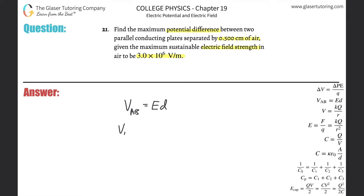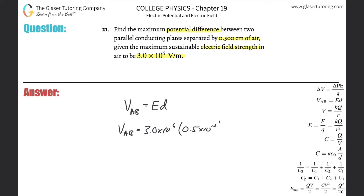So if we know that the maximum electric field strength of air to be 3 times 10 to the 6 volts per meter, and we want to find the maximum potential difference, we'd use that maximum value: 3.0 times 10 to the 6 volts per meter. The distance between them was 0.5 centimeters, and we need that in meters, so it's 0.5 times 10 to the minus 2 meters.